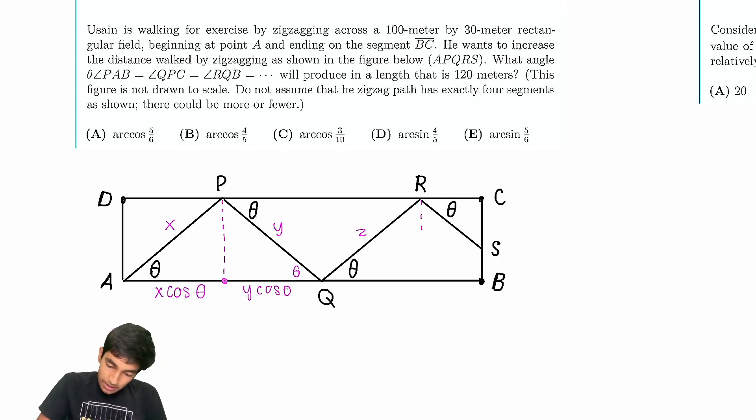Similarly, if this is z, then we have this is z cosine theta. And even at this last segment over here, we have that, let's say this is, I don't know, w. By alternate interior angles, we again can just do this. This is theta.